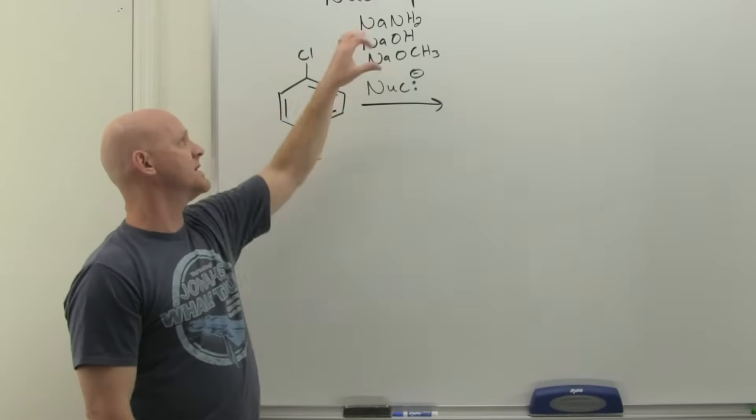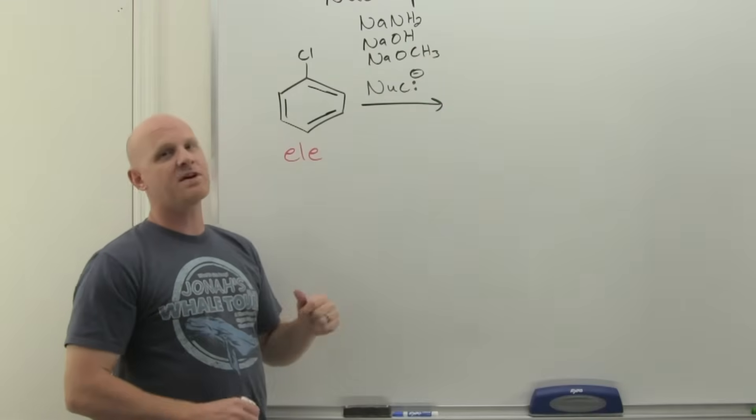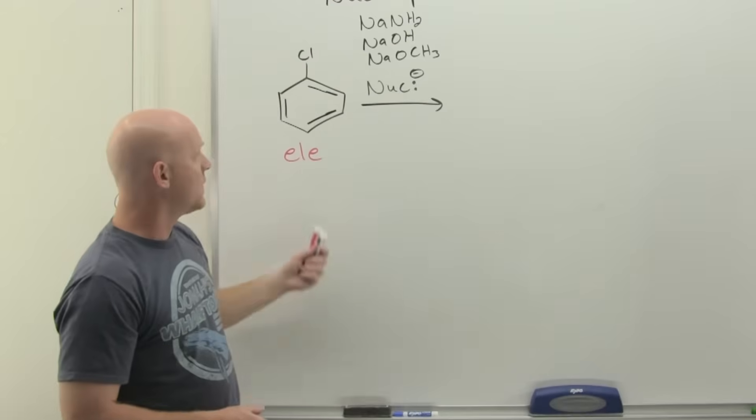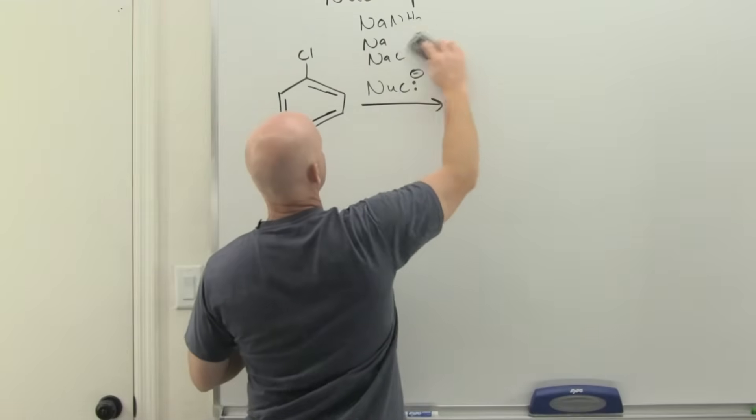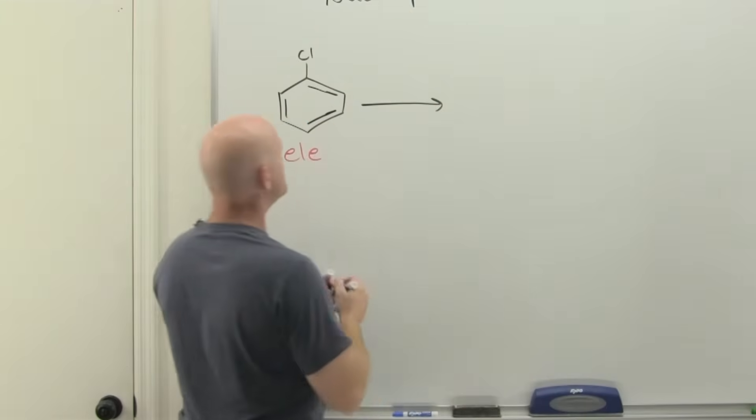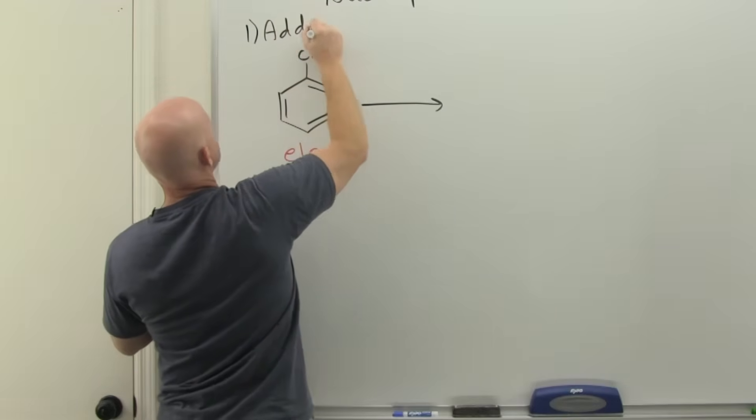Sometimes we'll do this with ammonia, just plain old NH3 under harsher conditions and get that to work. But these are going to be some of the most typical, and so we're going to take a look at one of the mechanisms here, and I'm specifically going to use NaNH2 in our mechanism. We've got two possible mechanisms here, and the first one is called the addition-elimination mechanism.